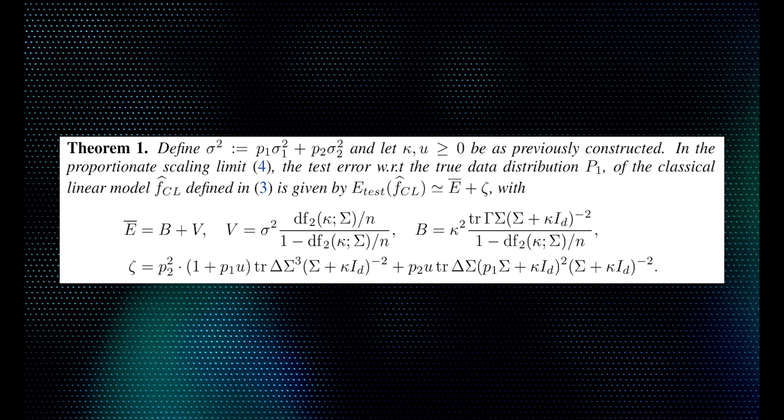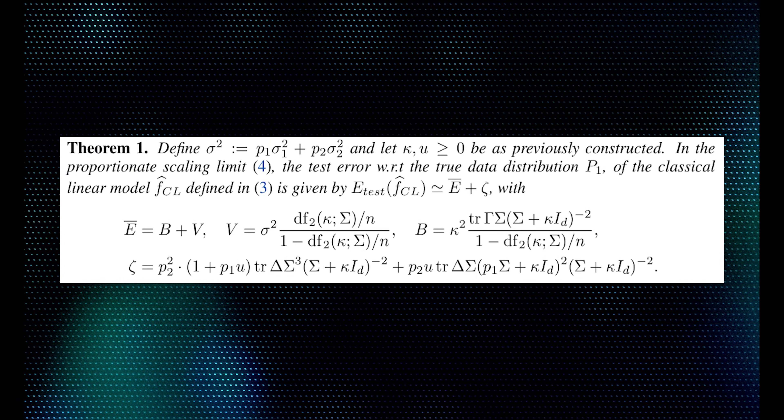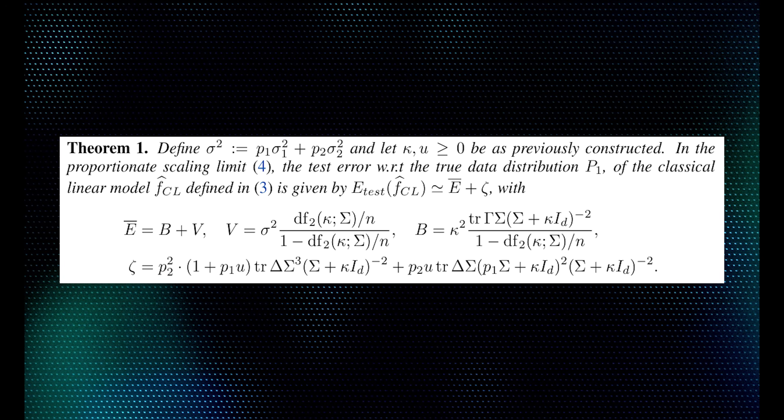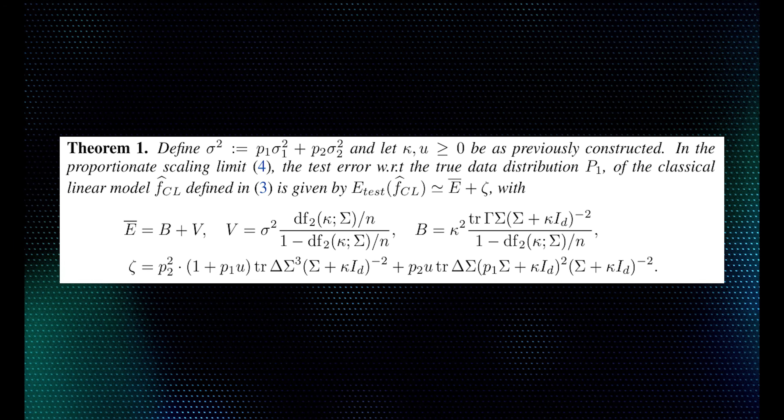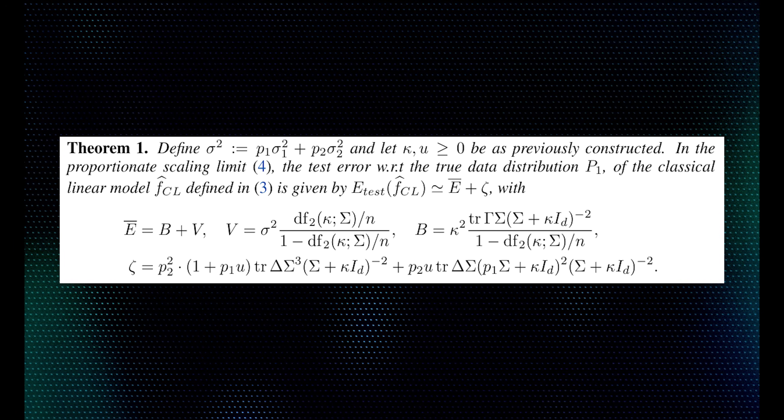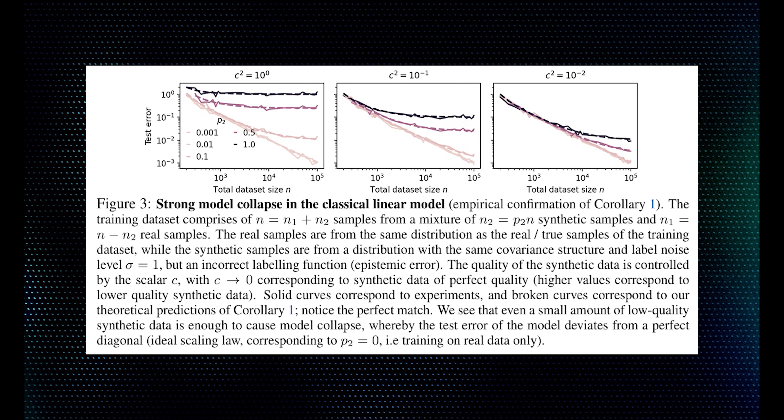But what they prove is that when you have synthetic data, you get an extra positive term in the bias-variance decomposition. This extra term is model collapse. Then they show how this has implications for scaling loss. This suggests we need to revise our thinking about how models will scale with future data if that data is corrupted with model outputs.